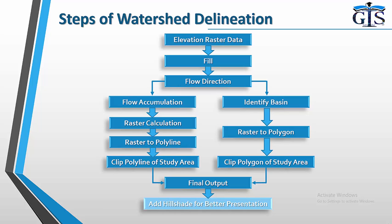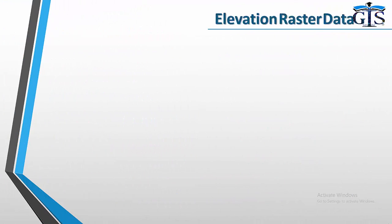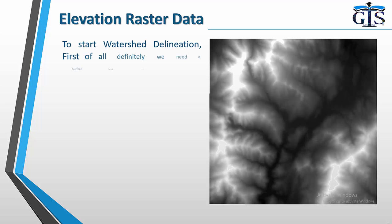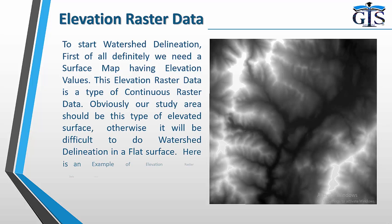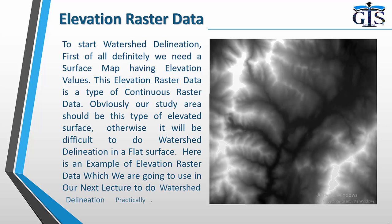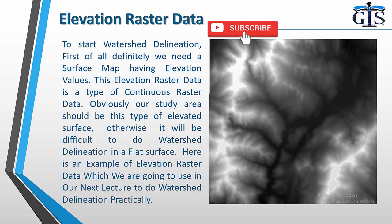We will learn and do all of this practically. Now let's understand each step. For elevation raster data: to start watershed delineation, we first need a surface map having elevation values. This elevation raster data is a type of continuous raster data. Our study area should have this type of elevated surface — otherwise it will be difficult to do watershed delineation on a flat surface. Here is an example of the elevation raster data which we are going to use in our next lecture.